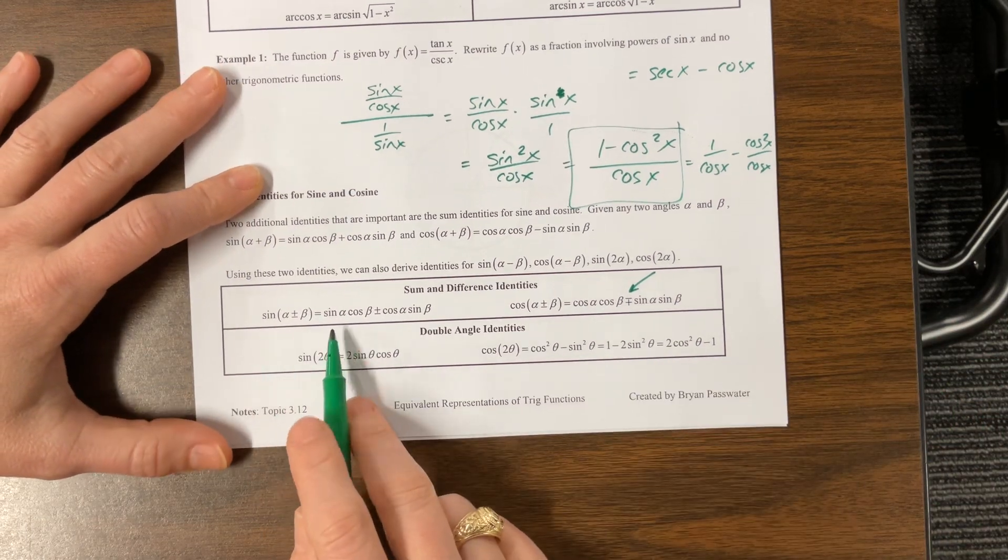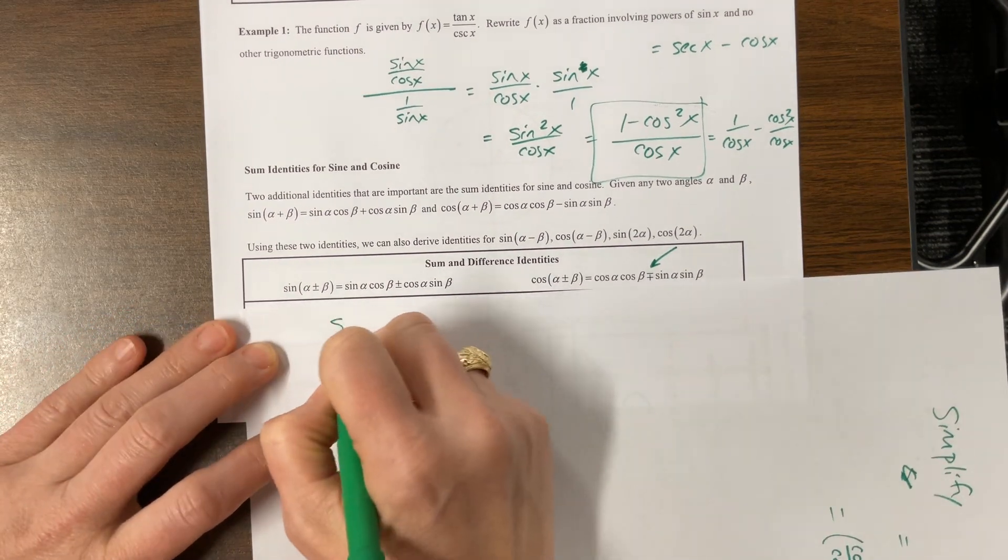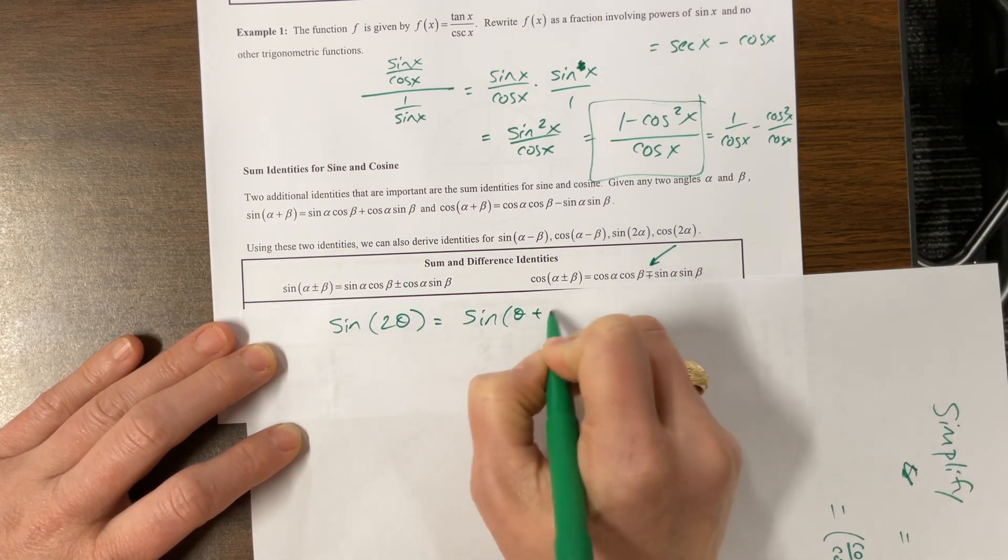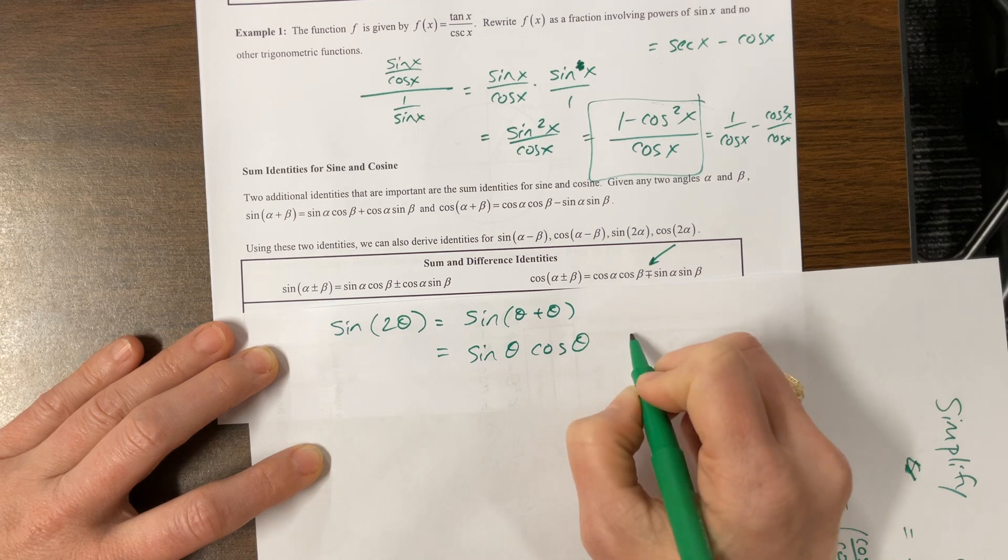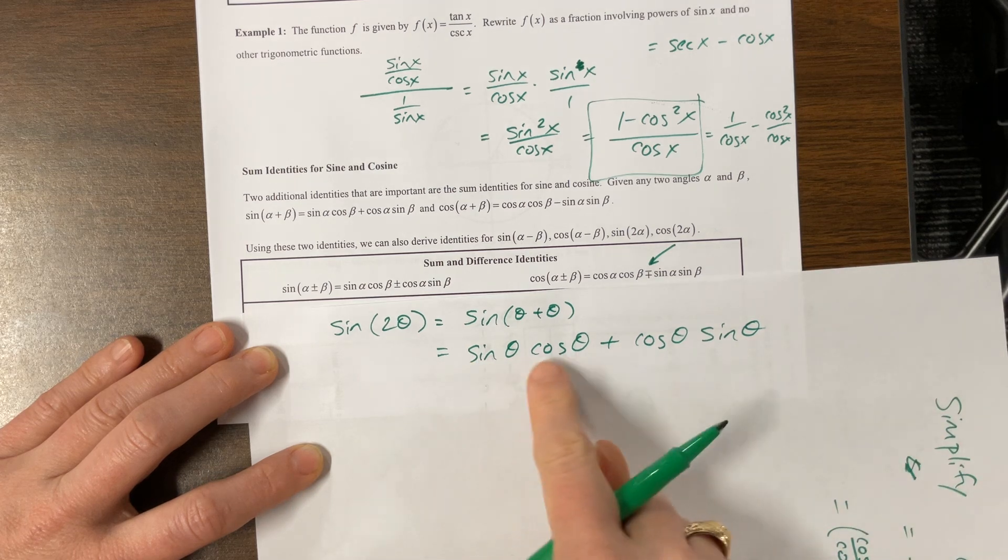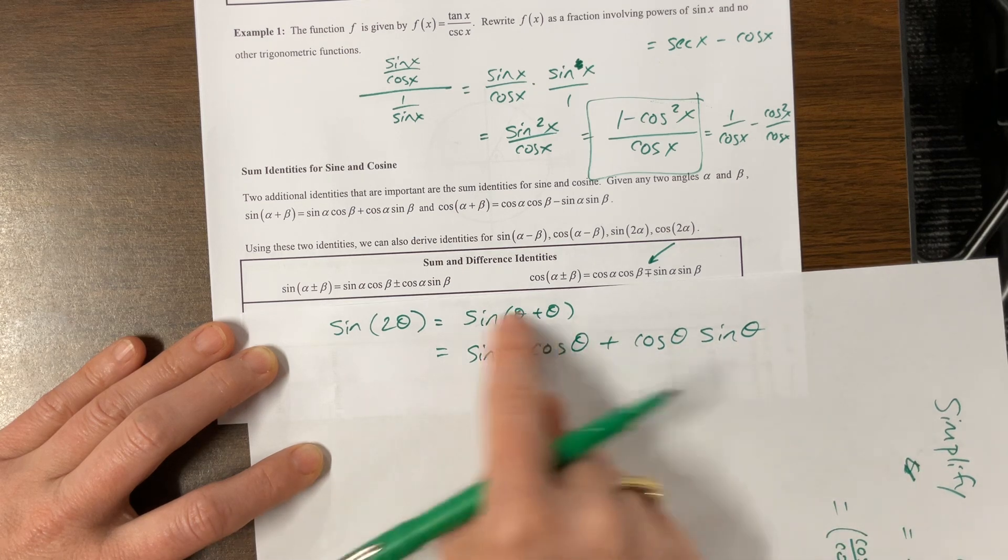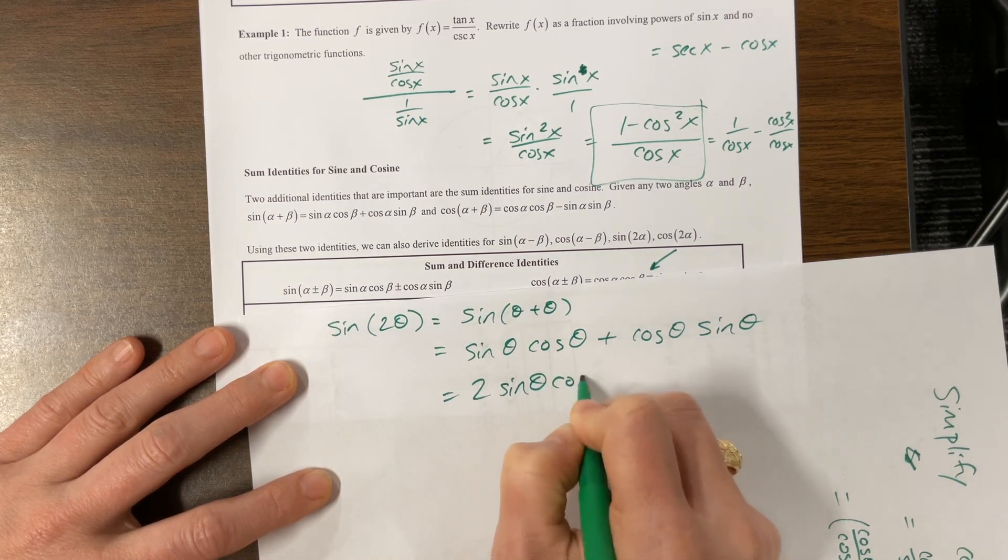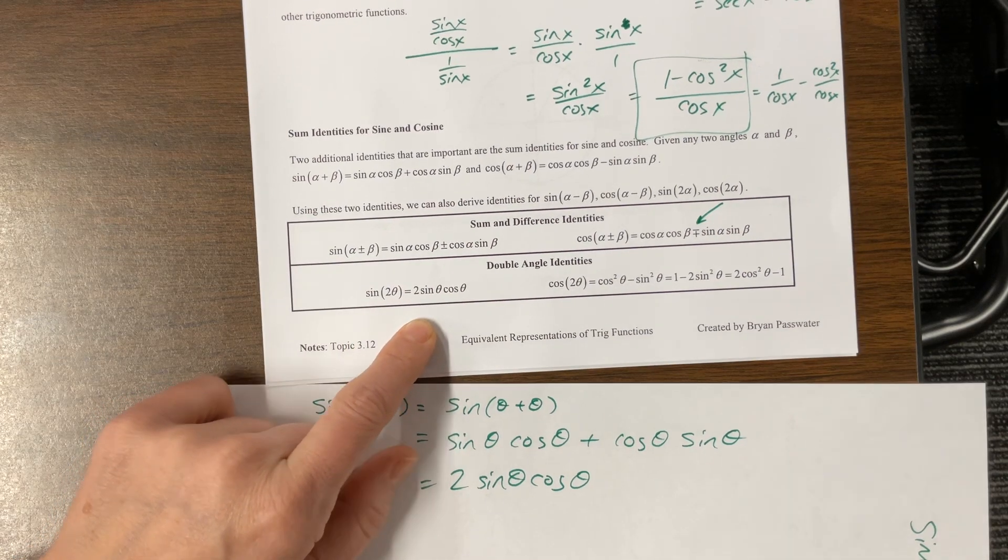Then what we did in my notes is I said, okay, well sine of 2θ would be the same thing as saying sine of θ + θ, which then we can use that identity sine cosine with the same sign. I'll write it the way that I usually go: sine cosine cosine sine with the same sign. The only angles I have are θ, so they all get θ. Well, notice sine times cosine and cosine times sine are equivalent things, so this is 2sinθcosθ. This gives us one of our double angle identities: sine of 2θ equals 2sinθcosθ.